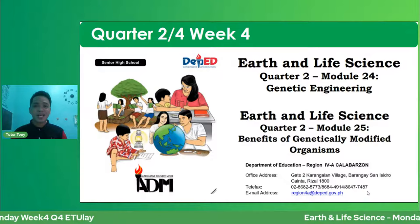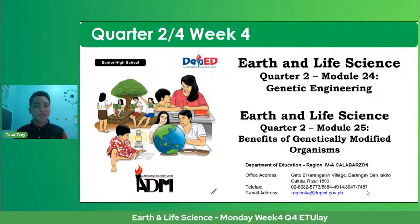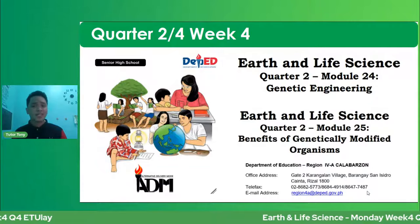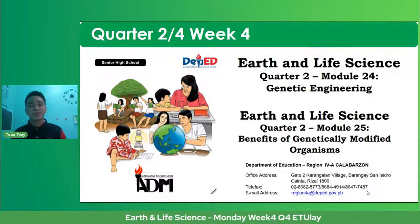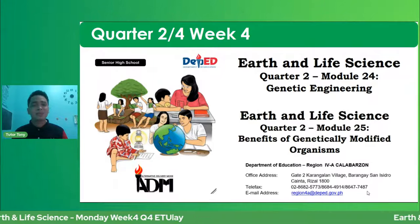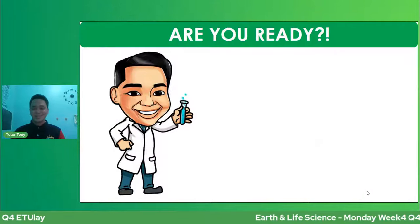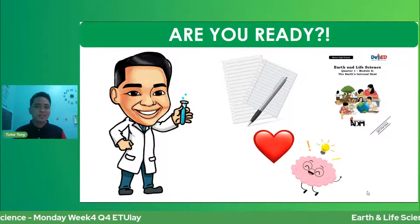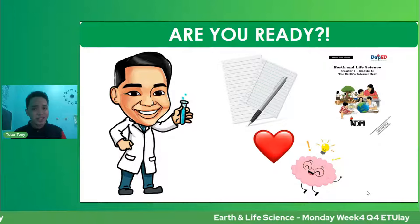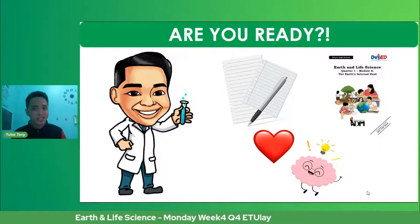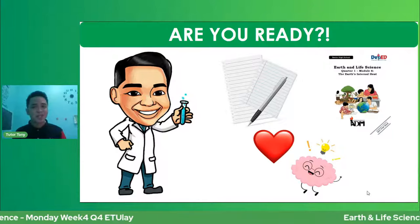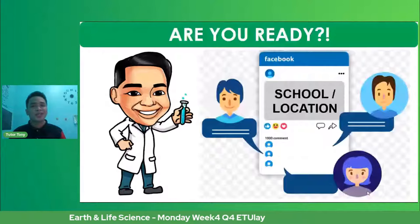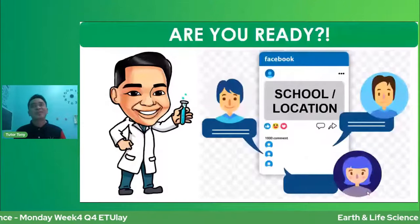As mentioned sa ating teaser kanina, we are using the module provided by Region 4A Calabarzon, the PIVOT module. For this session, we will be using two modules: Module number 24 entitled Genetic Engineering, and Module number 25 entitled Benefits of Genetically Modified Organisms. I hope ready na ang inyong mga papel, lapis, or ballpen or any writing materials. Kung meron kayong kopya ng module, mas mainam. Kailangan din ang presence of heart. So don't forget to mention the name of your school and location kung saan kayo nanonood right now.